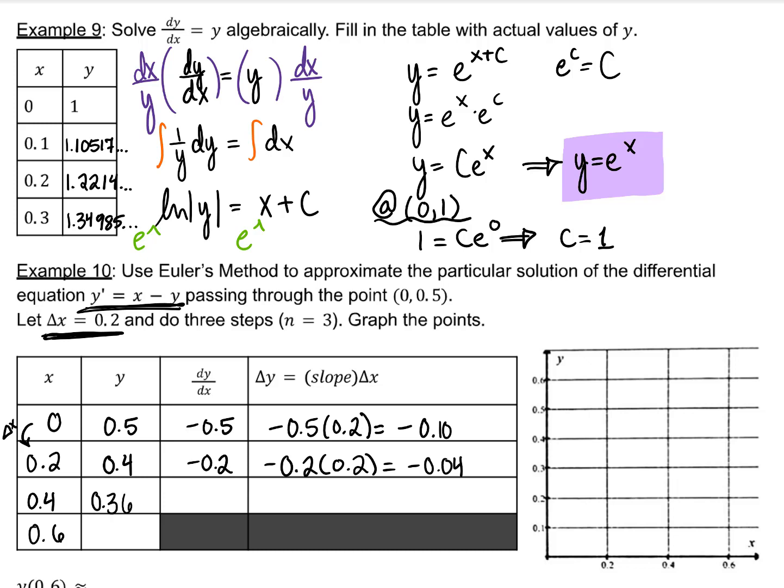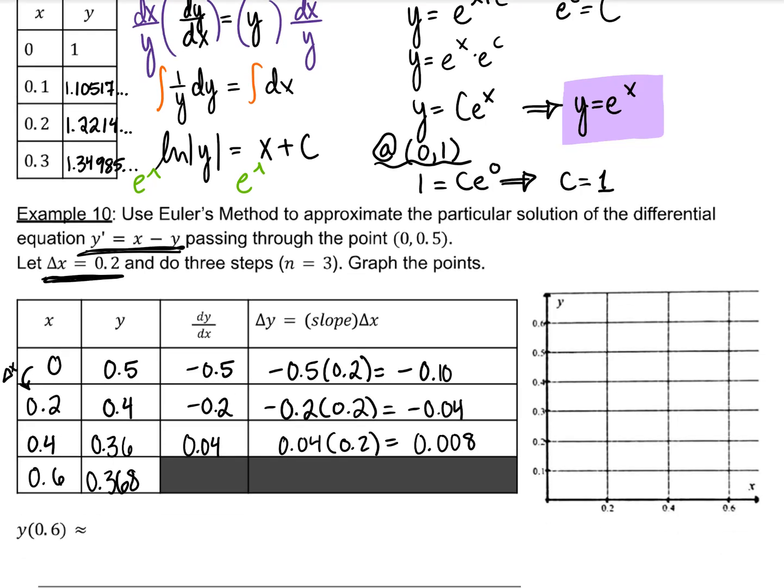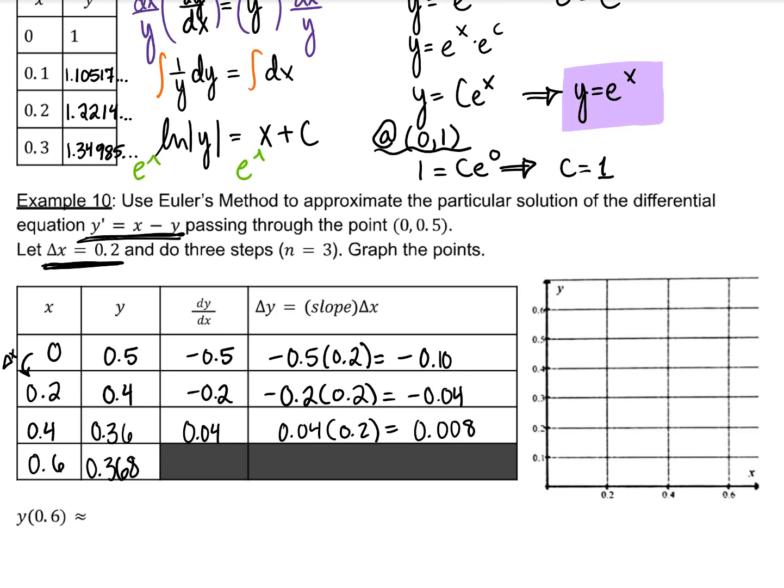And repeat the process. When we add 0.008 to the previous y, we get 0.368 as our approximation for the y value at 0.6.